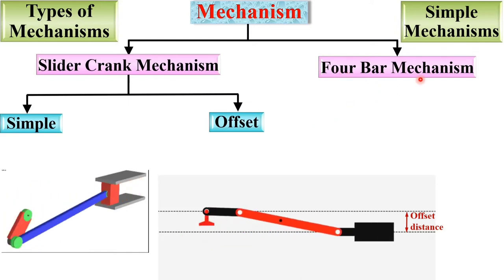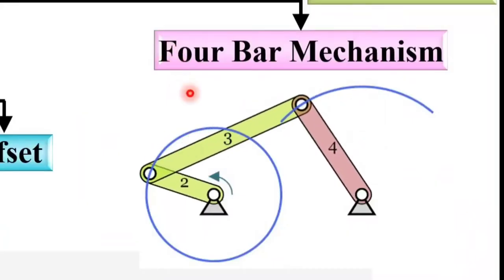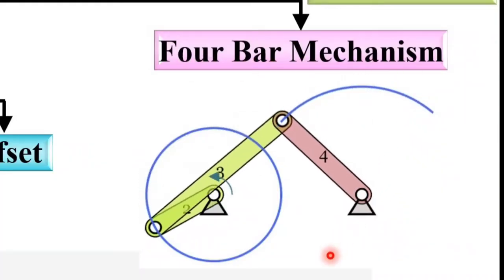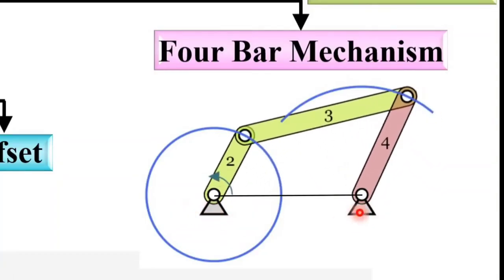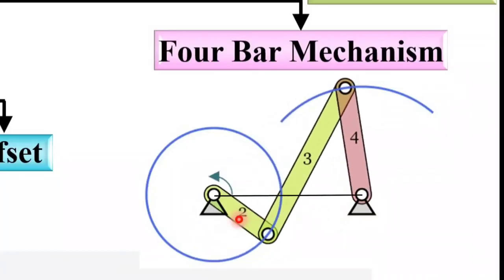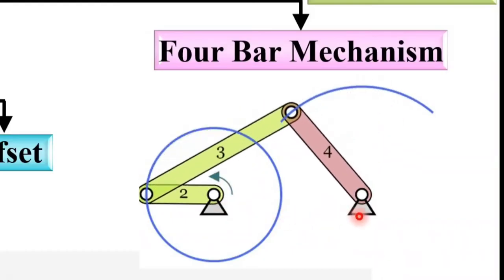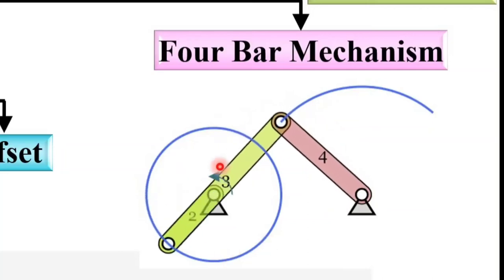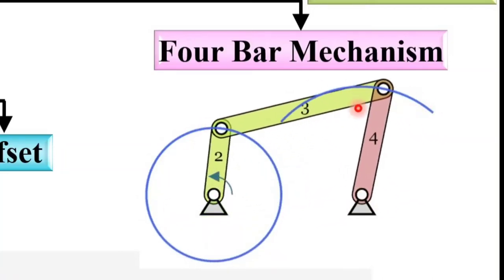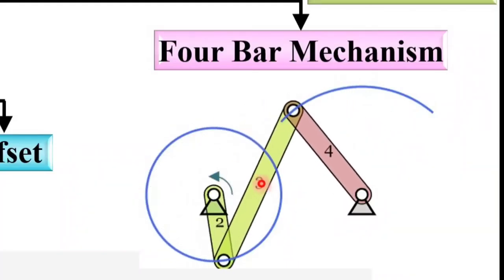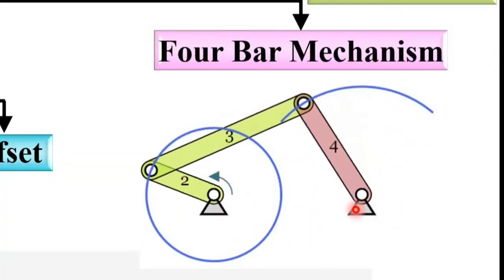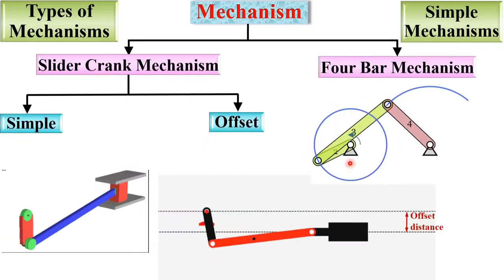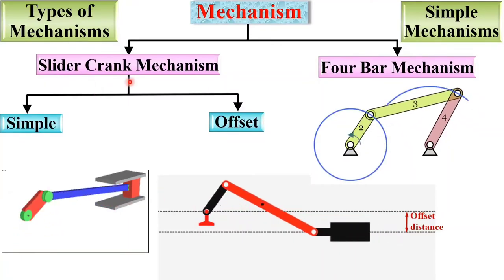Now let us see the second type of mechanism. Here you can see there are actually four links, that is why it is called the four bar mechanism. The first link connecting the two fixed points is known as the frame — this is the fixed link. The remaining links are movable: link two is rotating, link four is oscillating, and link three is the connecting rod which connects link two and link four.